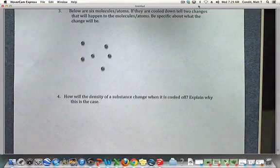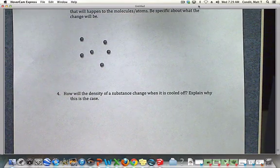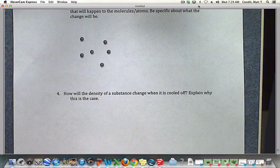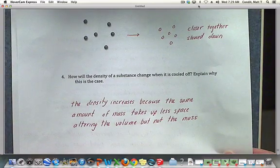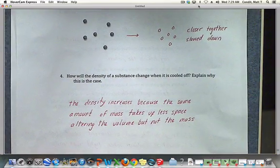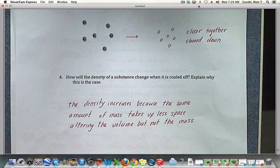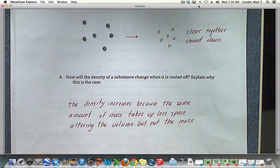And finally, question number four: how will the density of a substance change when it's cooled off? Explain why this is the case. Again, if we take our example from above, the density increases because the same amount of mass takes up less space. That alters the volume, but not the mass. And that's it. Everybody have a good test.